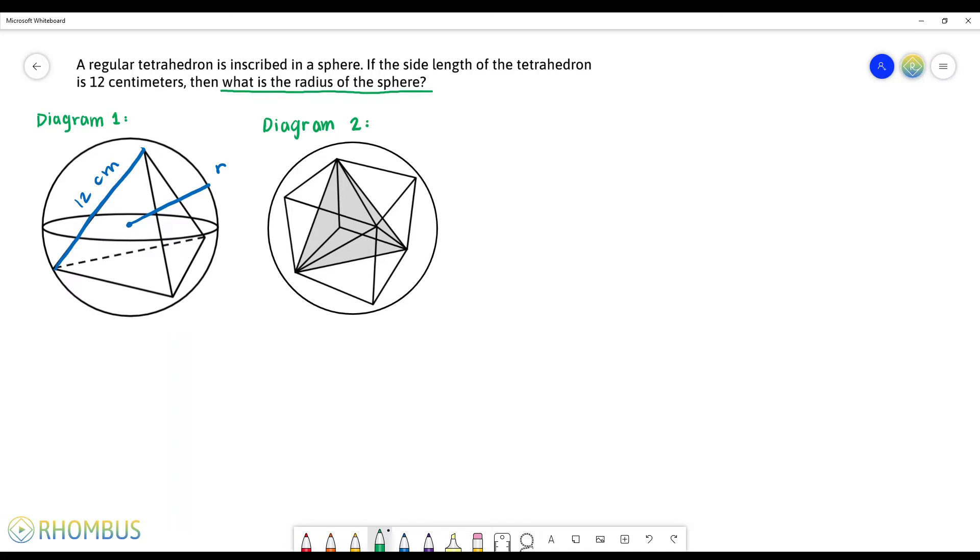So the reason we need a cube to solve this problem is because unlike a tetrahedron, we can figure out the radius of the sphere using the cube's edge value. In order to figure out the edge value, we need to take a closer look into our diagram.